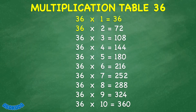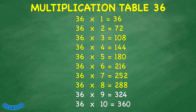36 times 2 equals 72. 36 times 3 equals 108. 36 times 4 equals 144. 36 times 5 equals 180. 36 times 6 equals 216. 36 times 7 equals 252. 36 times 8 equals 288. 36 times 9 equals 324.